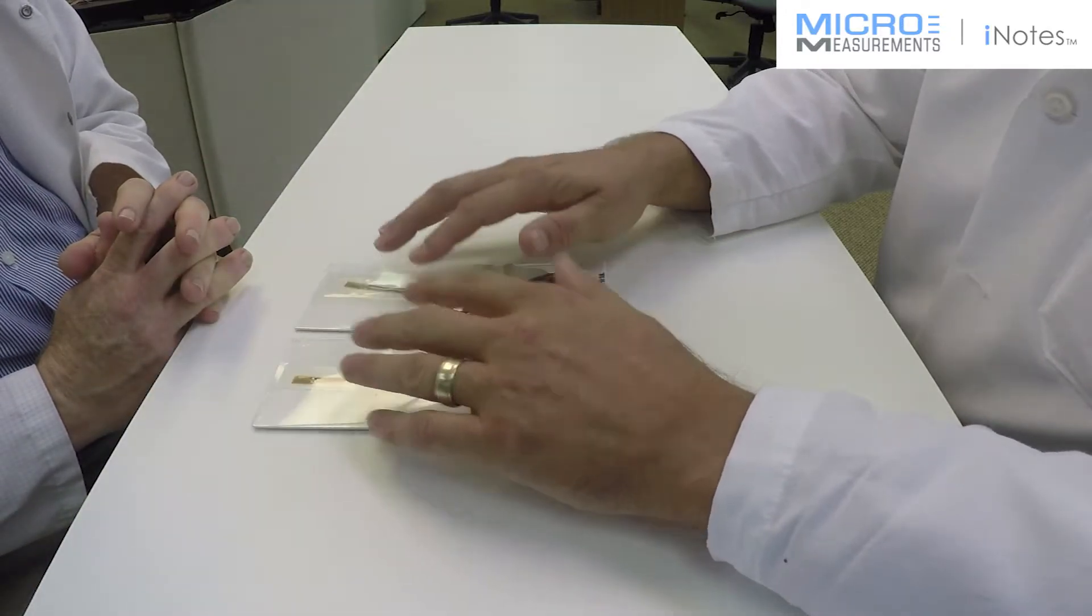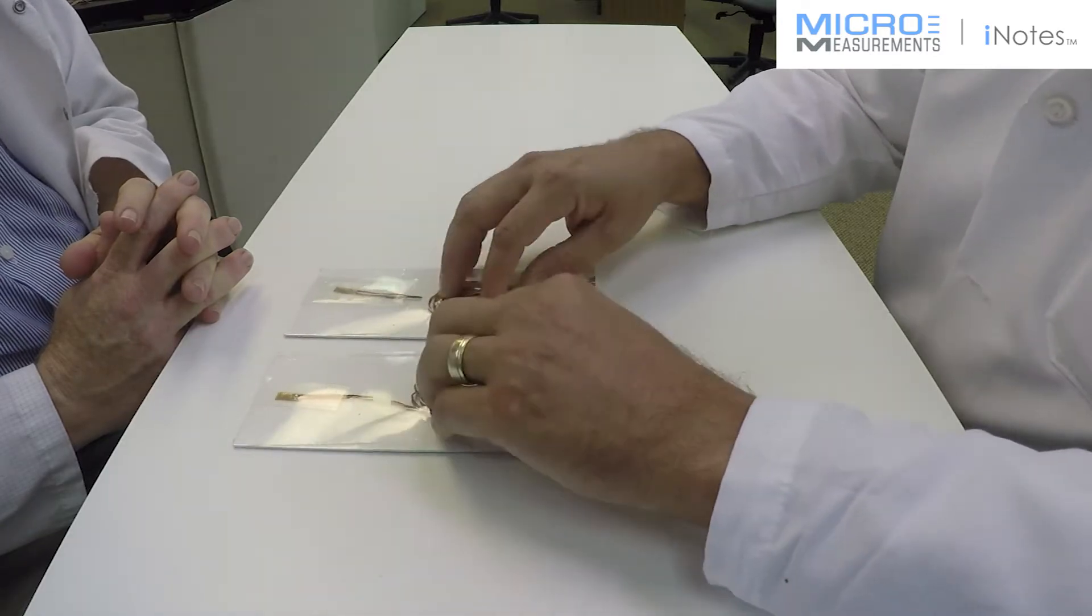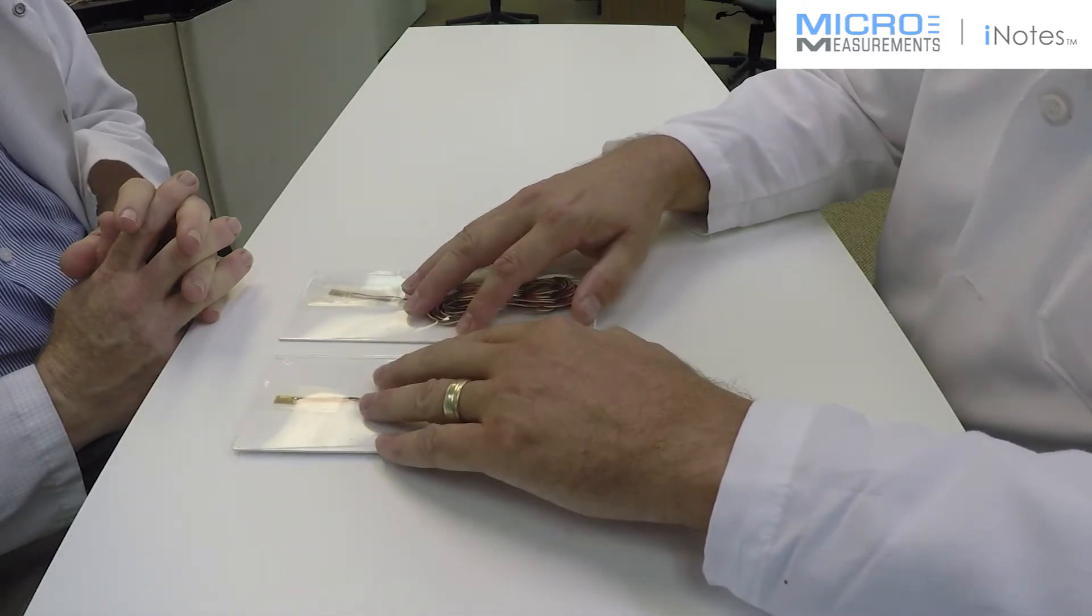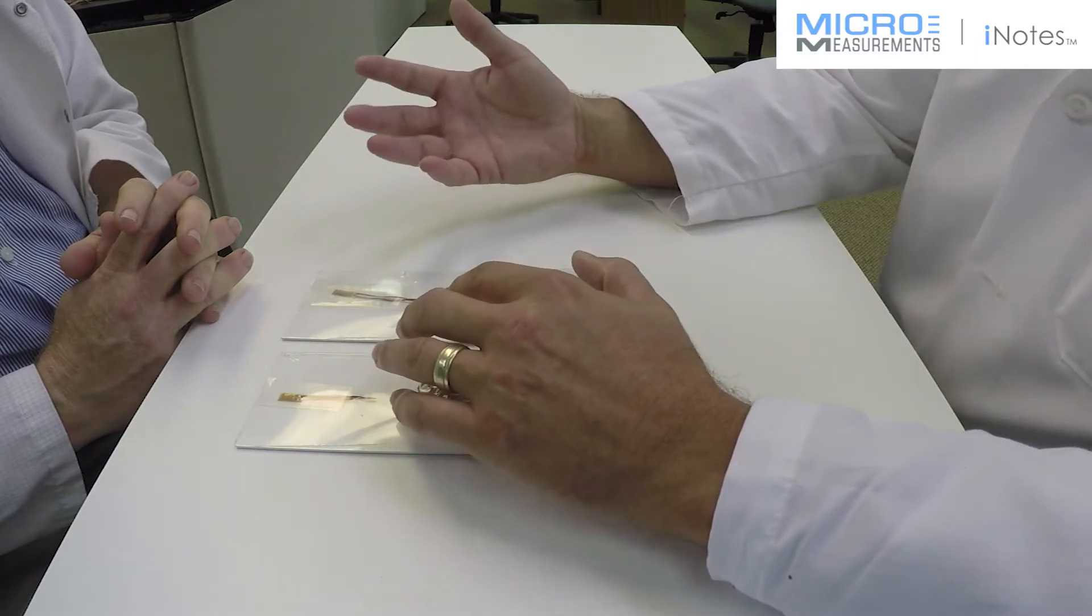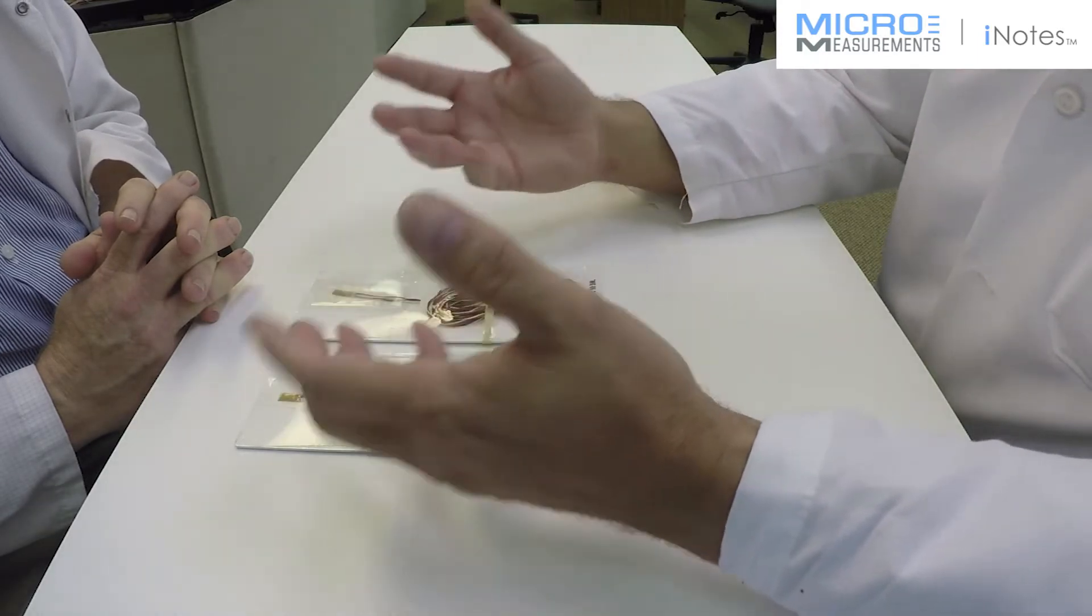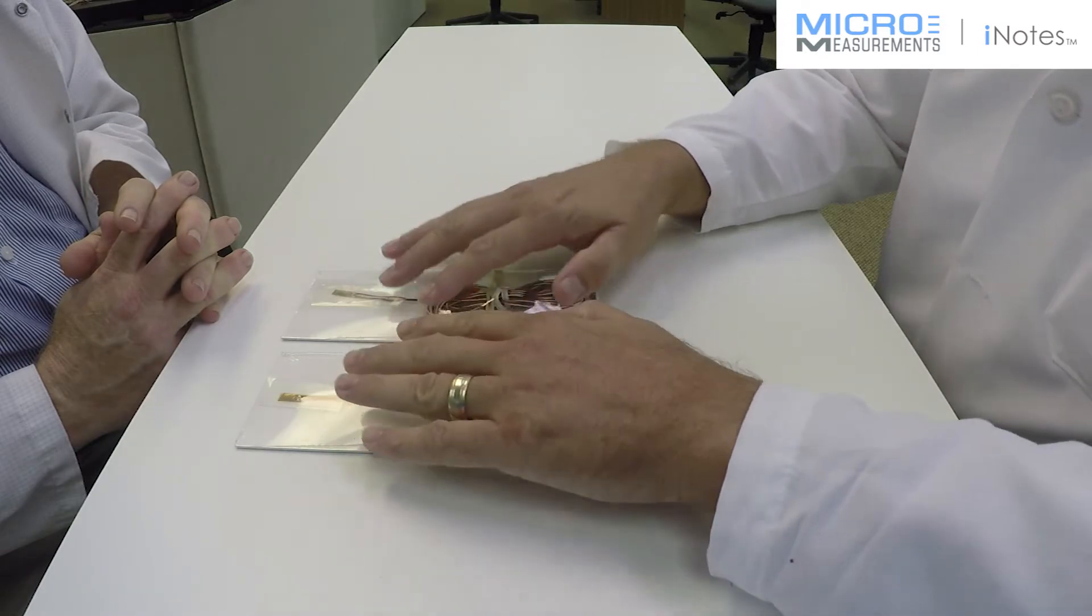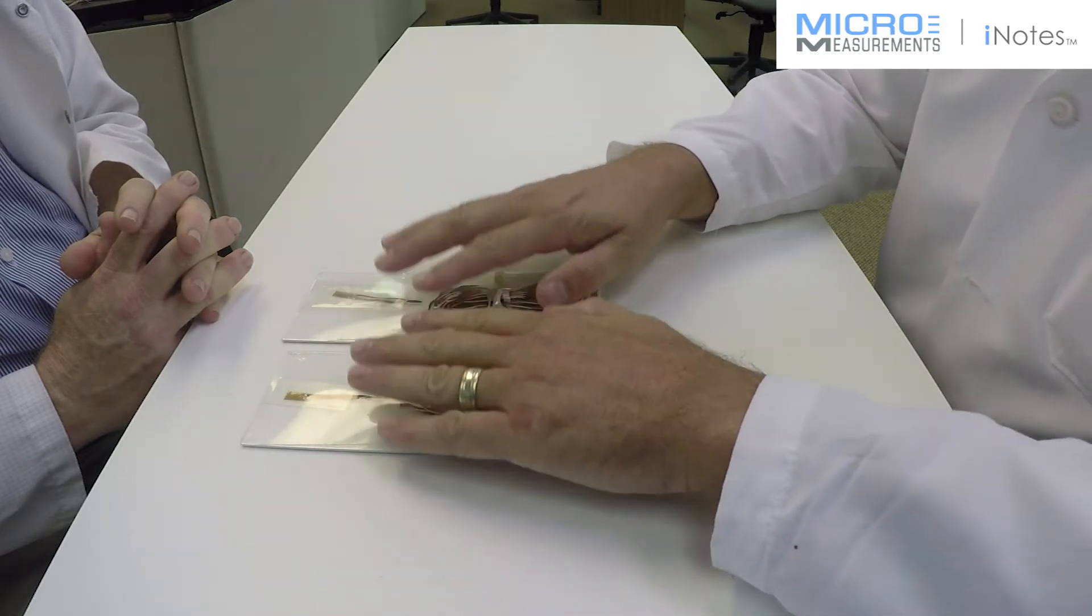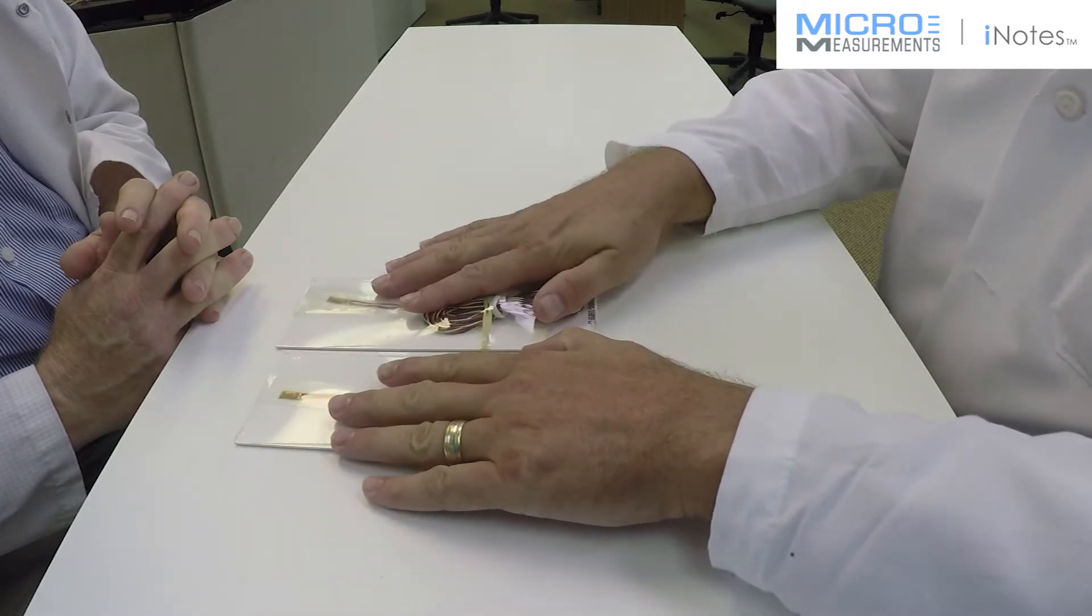So what we find is that more and more today, customers are looking for strain gauges with cables on them. And now when you've got applications like maybe inside of a running engine or maybe close to a running engine, something that's generating a lot of heat.